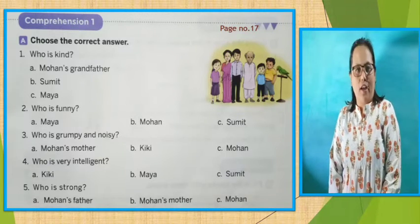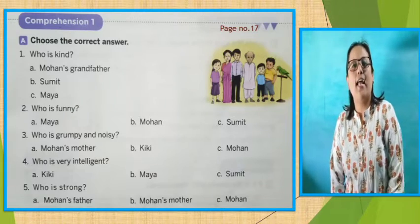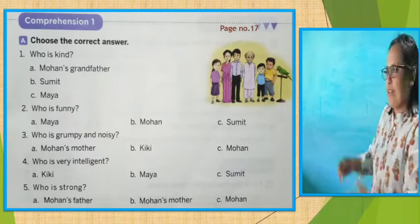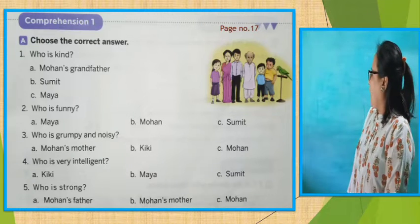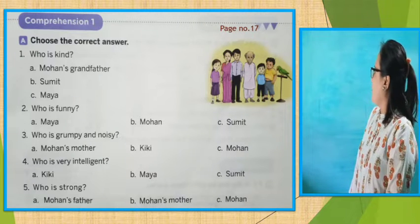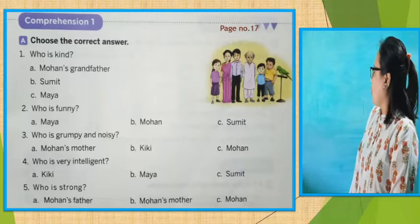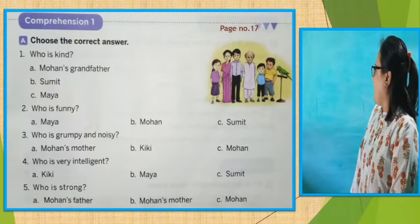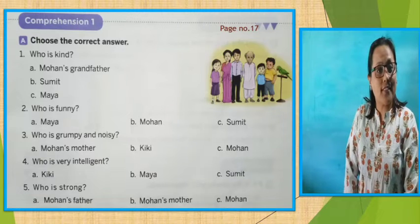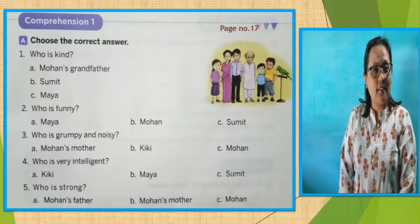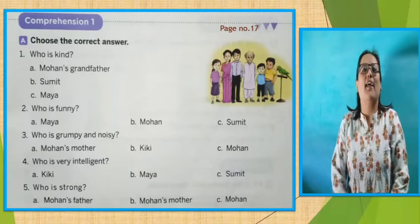Yes children, you have to choose the correct answer. Let's see number A: Who is kind? Number A, Mohan's grandfather. Number B, Sumit. Number C, Maya. Tell me, who is kind? Think. Yes — Mohan's grandfather.